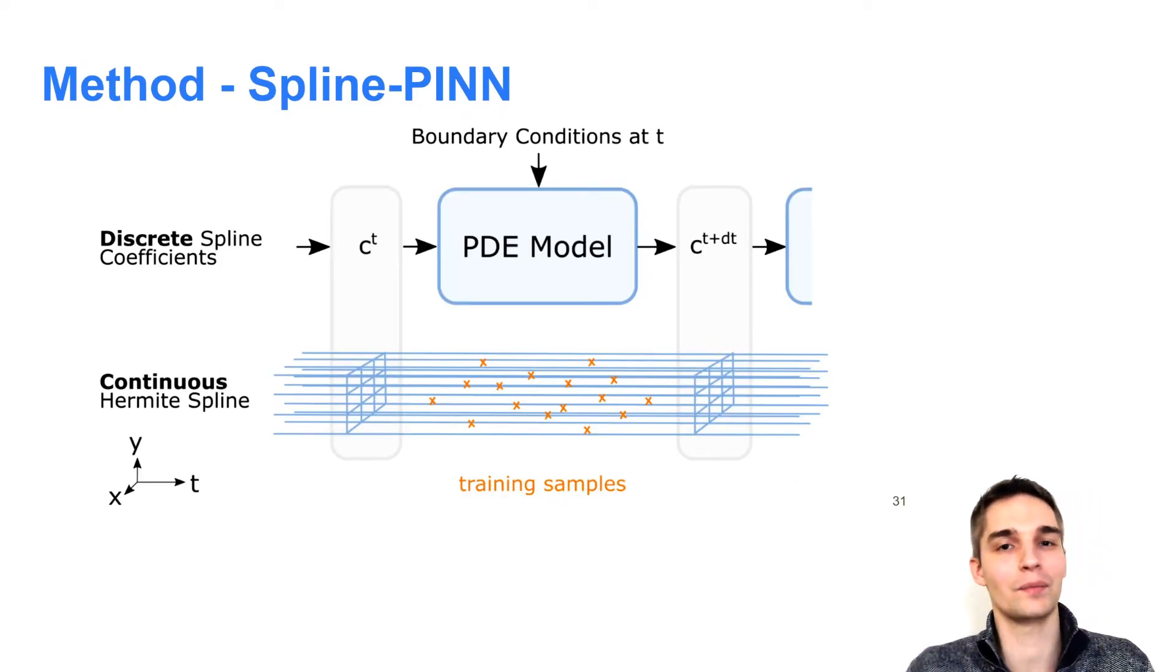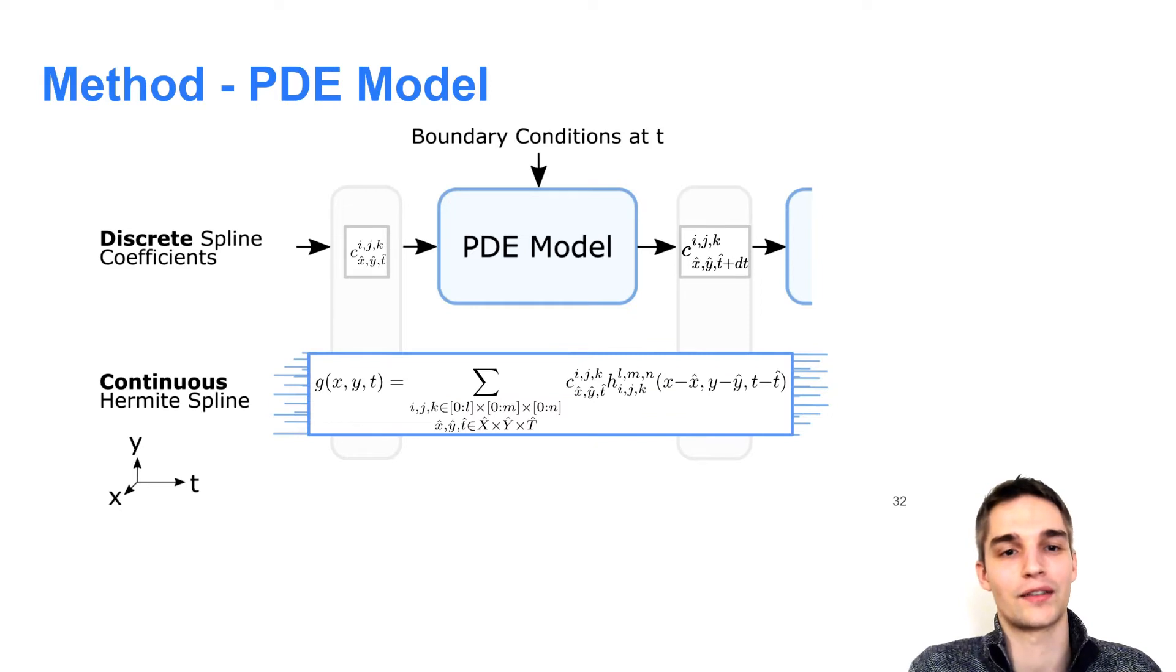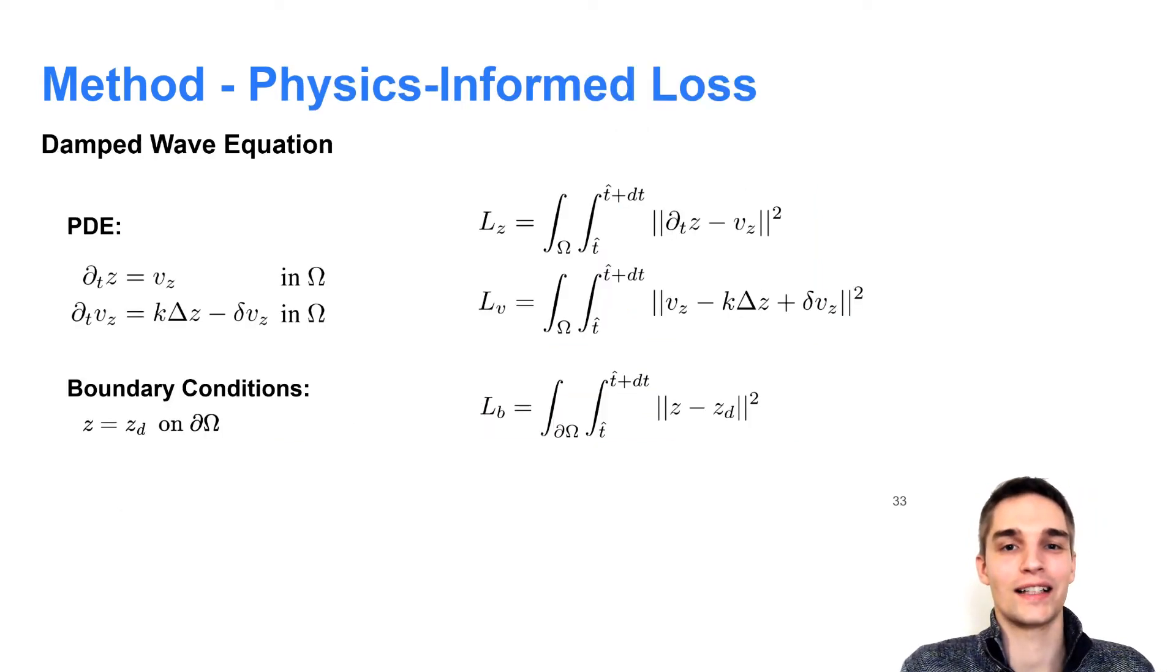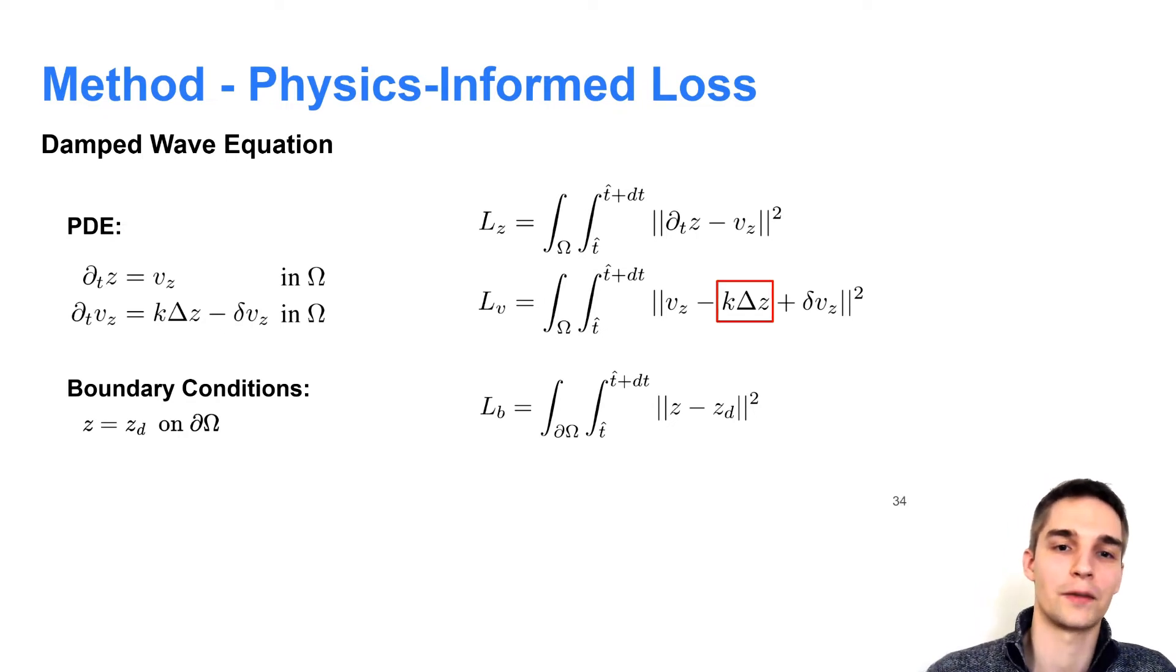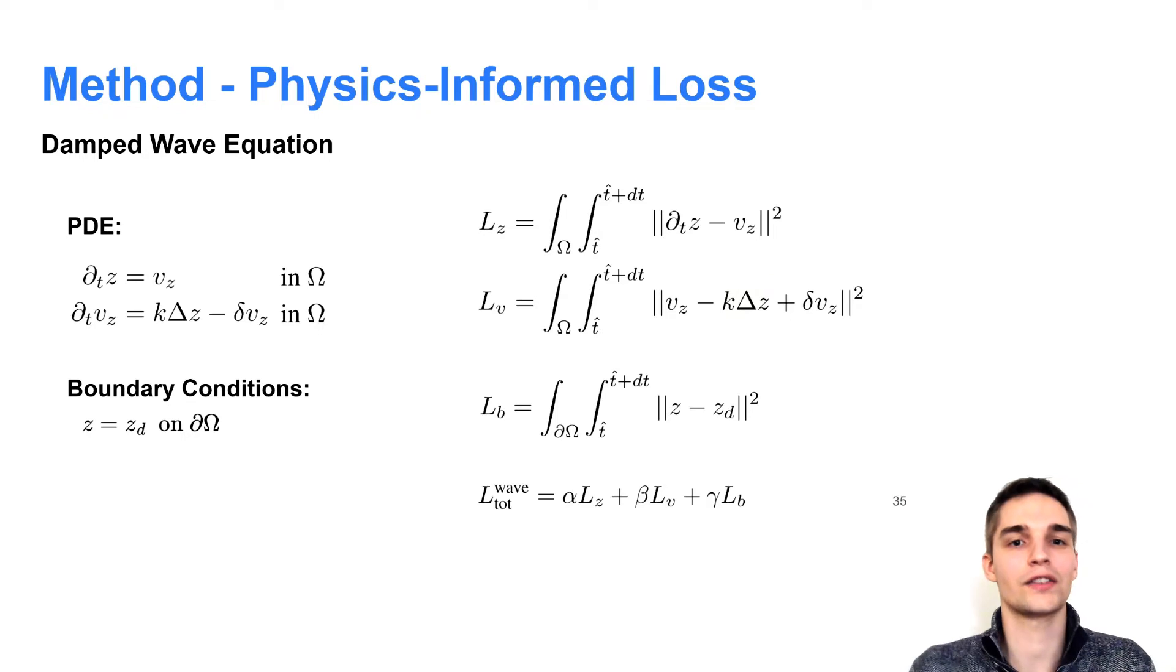So if we have another look at our spline PIN depiction, this is how we obtain continuous fields from our discrete spline coefficients. Okay, now let's have a look at the physics-informed loss function. To compute this loss function, we integrate the squared residuals of the underlying PDEs over the domain omega and boundary conditions over the domain's boundary. The integral is computed by drawing random samples at different grid offsets within the domain omega and its boundary. Here for the wave equation, you can see that we have second-order derivatives for the Laplacian. Thus, as mentioned before, we need at least first-order Hermite spline kernels in x and y. Otherwise, we run into problems with this integral. The final loss term consists of a weighted sum of these terms with hyper parameters alpha, beta, and gamma.